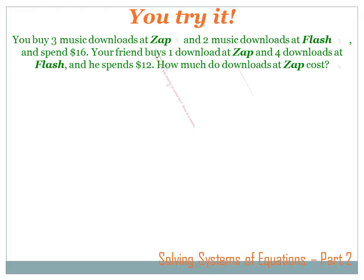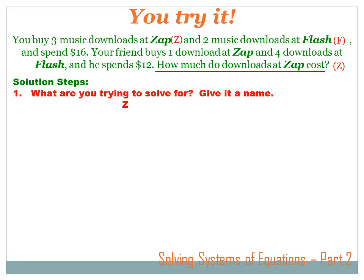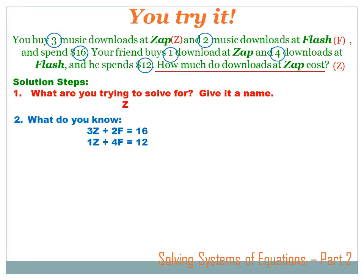Our system is to first figure out what we're trying to solve for. We CUCCd and underlined 'how much do downloads at ZAP cost?' That's what we're trying to solve for, and we'll call it Z. Second step: what do we know and put it into algebraic format. We know that you bought three music downloads at ZAPs and two music downloads at Flash and spent a total of $16. So three times the cost of ZAPs downloads plus two times the cost of Flash downloads equals $16. Your friend bought one at ZAPs plus four at Flash and spent $12.